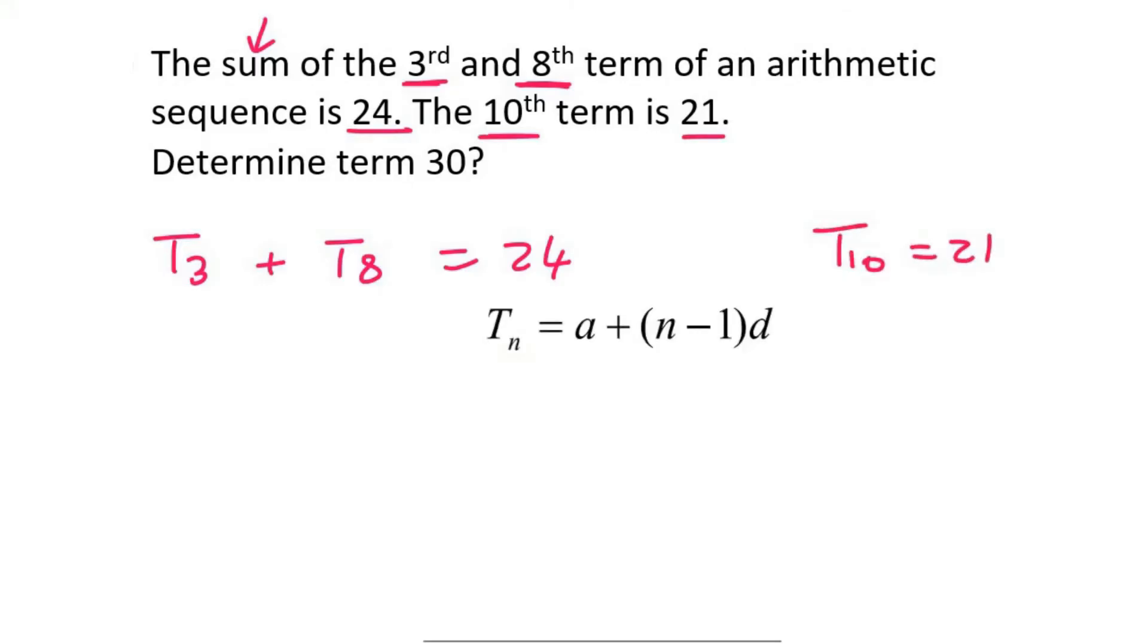So now all we do is we just fill in as much as we can. So term 3, if we use this formula, is the same as A plus, now N would be 3 because it's term 3, and then the common difference we don't know.